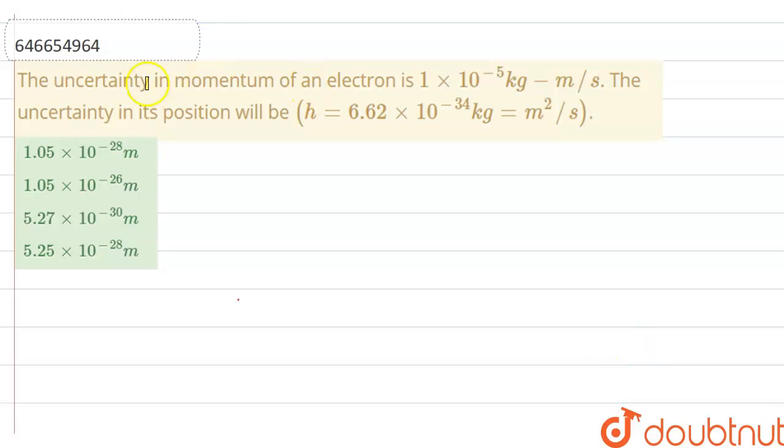Hello everyone, let's start the question. The uncertainty in momentum of an electron is given here, and the uncertainty in the position will be. We have to given Planck's constant is also here. So guys, how to solve?